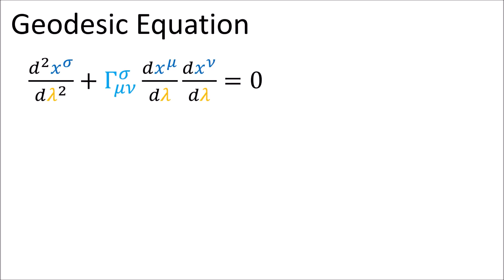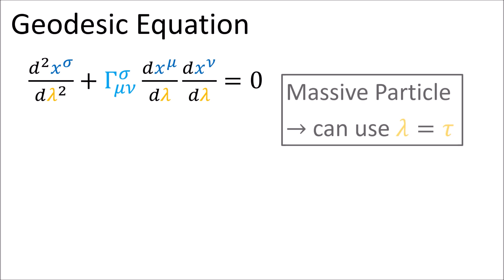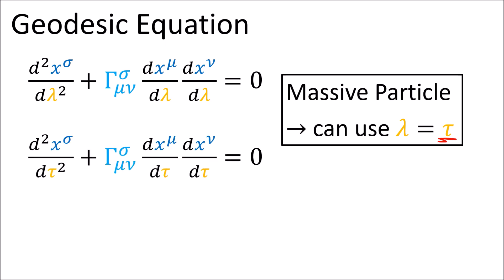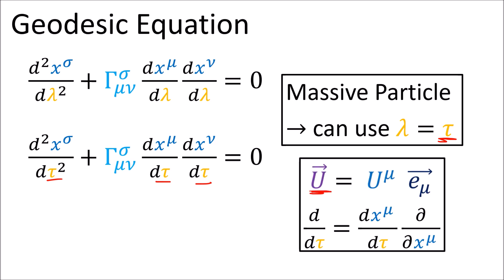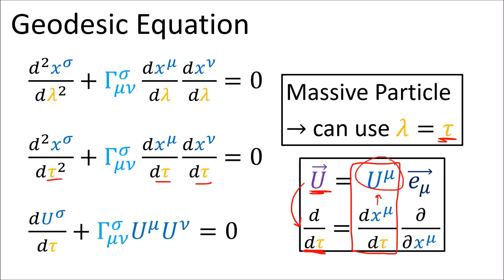So let's start by calculating geodesics of free particles experiencing gravitational waves. We're going to focus on massive particles, so we can use the proper time tau as our path parameter along geodesic curves. Since the four-velocity vector u of a particle can be written as the particle's tangent vector d by d tau, we can rewrite the derivatives dx by d tau as the u components of the four-velocity, to make the geodesic equation look simpler.